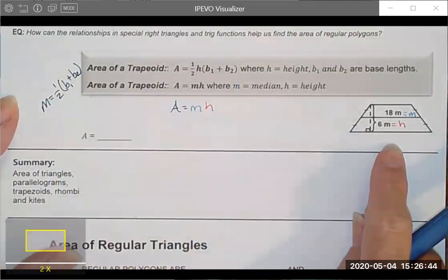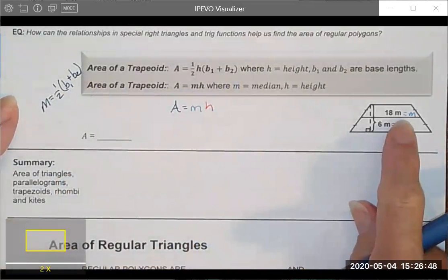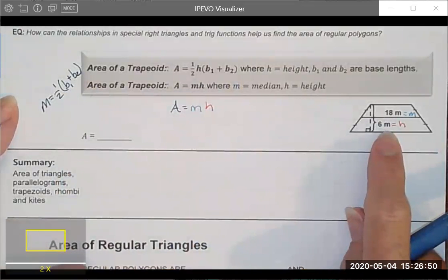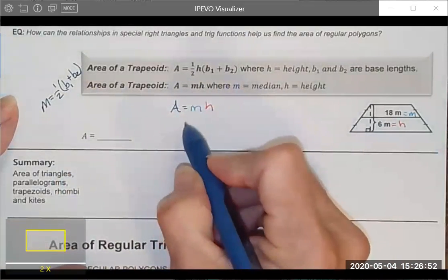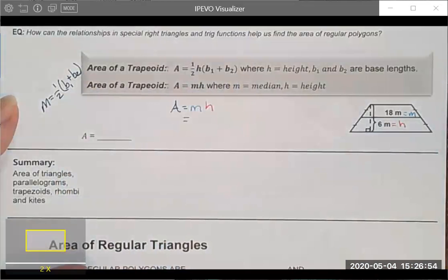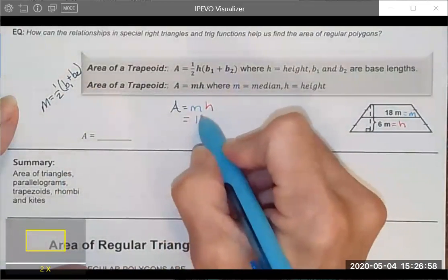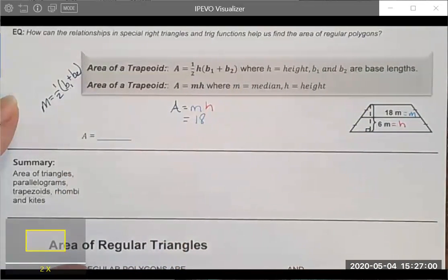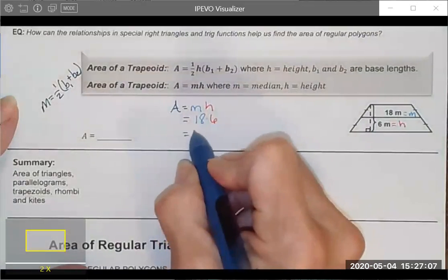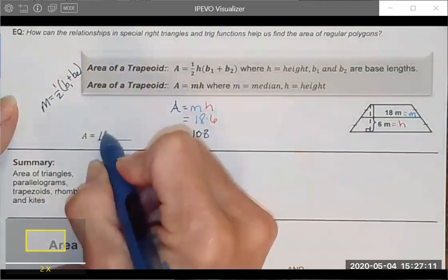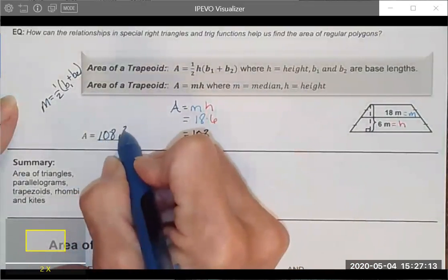In this particular case, just to give you something that perhaps you haven't seen before, we were given the median and the height. So to find the area of this particular trapezoid, I'm just going to do some real simple substitution. Do 18. I'm going to multiply this by 6. And that ultimately should give me the area of my trapezoid. Comes out to 108, 108 units squared.